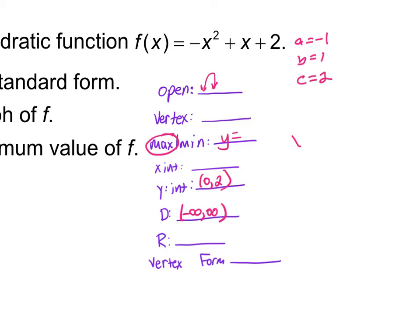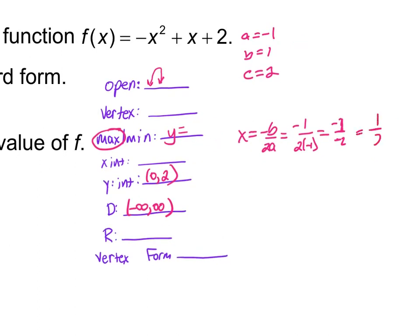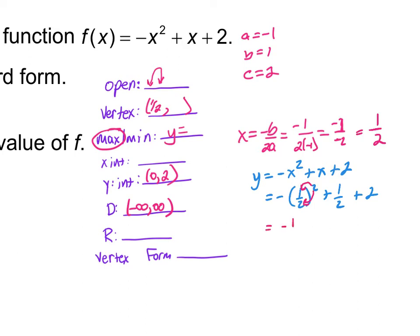To find the vertex, we use x = negative b over 2a. So x = negative 1 over 2 times negative 1, which is negative 1 over negative 2. The x part of my vertex is 1/2. Now to find y, we plug 1/2 into y = -x² + x + 2. So we have -(1/2)² + 1/2 + 2.